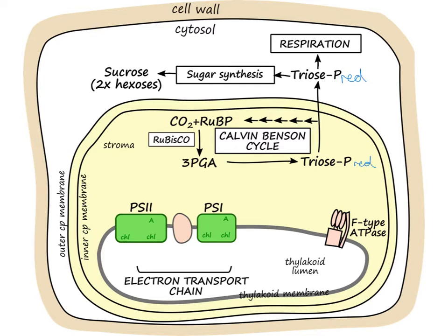Those triose phosphates are reduced sugars — they're 3-carbon sugars rather than 6-carbon, but they're reduced molecules, so they've got energy. In order to make sugars, we need to look at a process called the Calvin-Benson cycle. This is sometimes called the light-independent stage, but I don't like that terminology because a lot of the enzymes are themselves regulated by light, so the Calvin-Benson cycle is a better name for it.